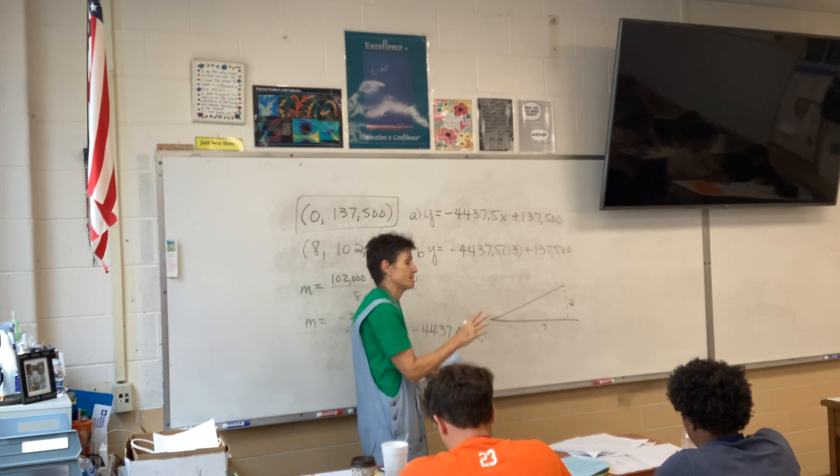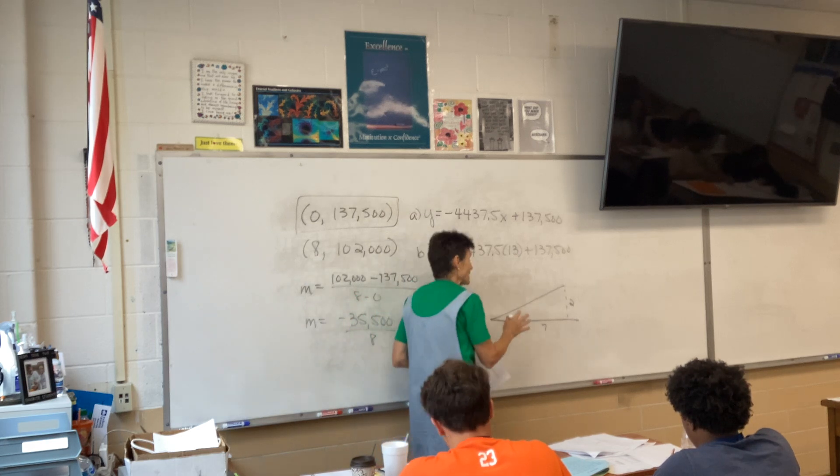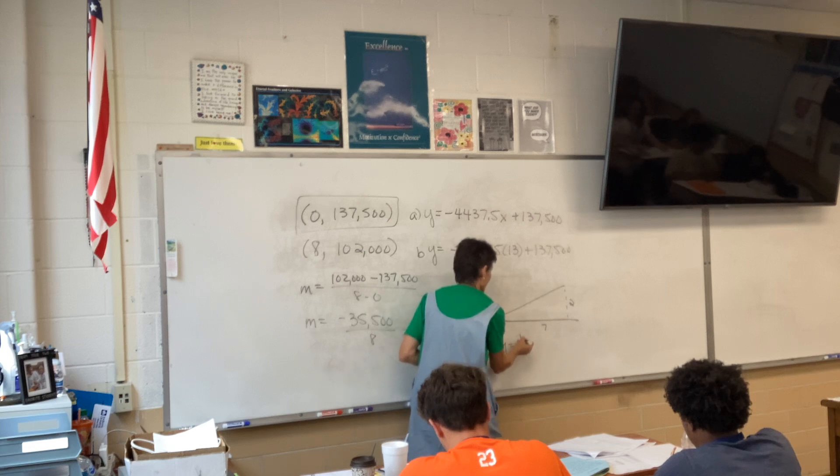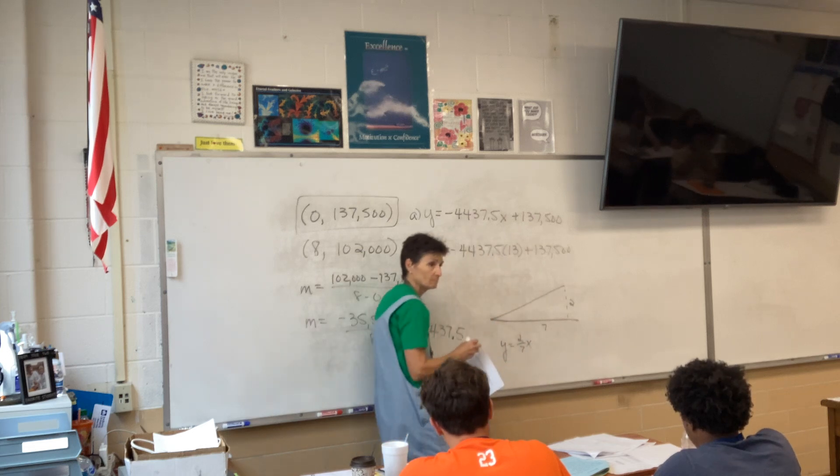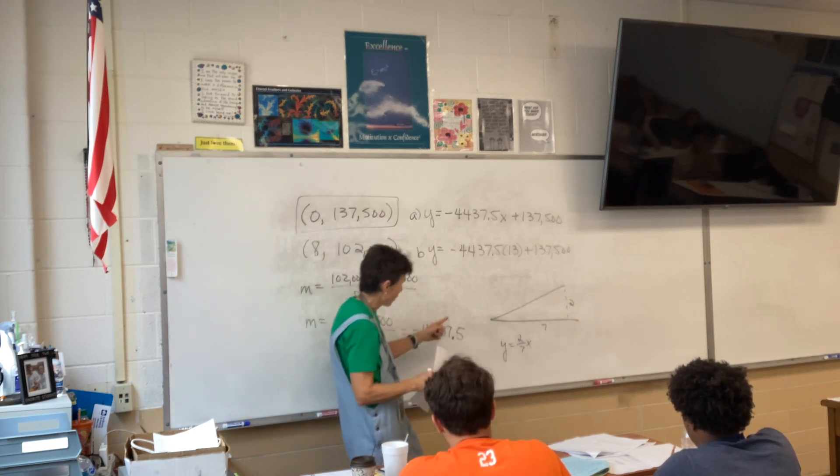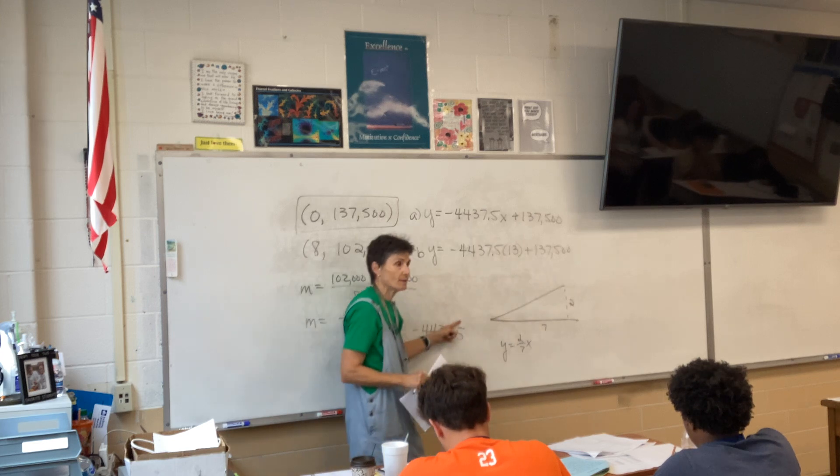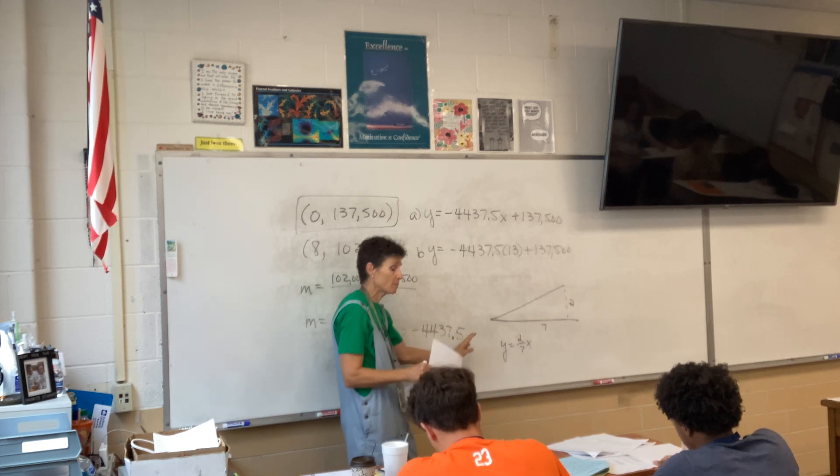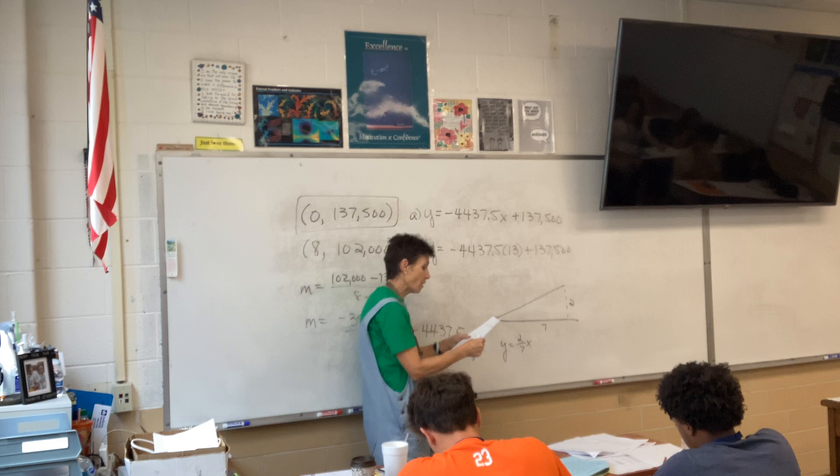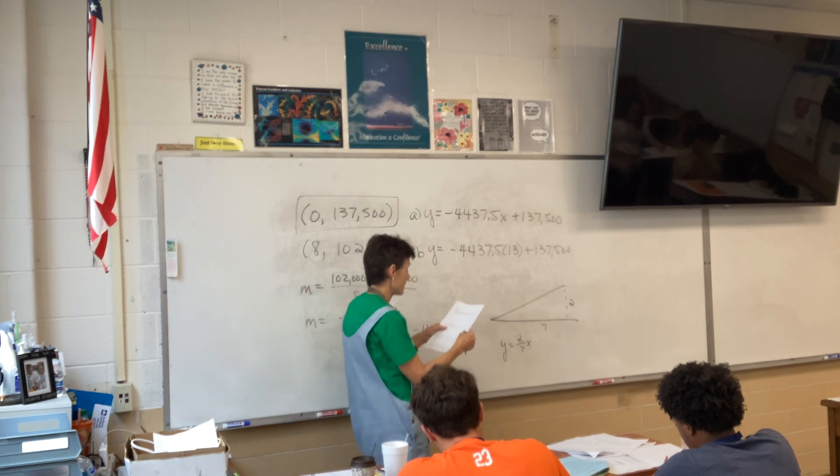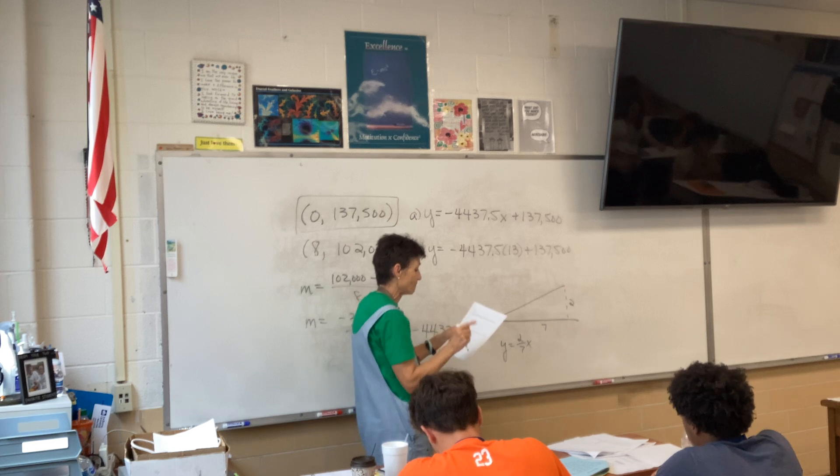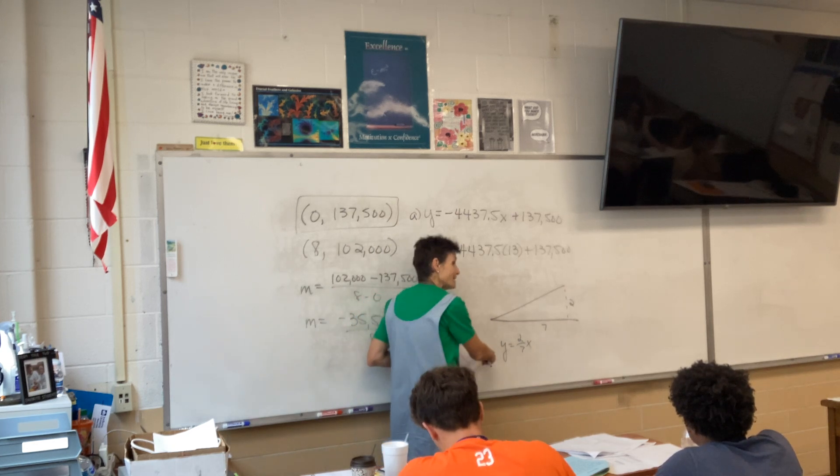Here's the airplane climbing. And the ratio, the slope is two-sevenths. Doesn't that mean this is two and this is seven? Yeah. So if you want, you can write an equation that says y equals two-sevenths x.